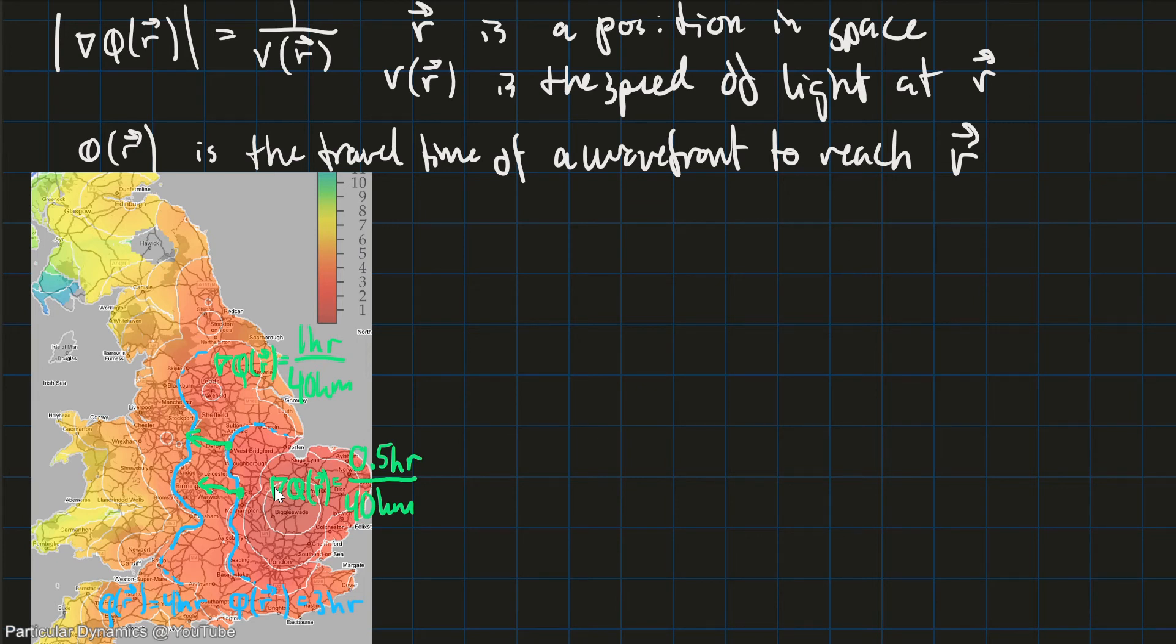And intuitively we see that in the first one where we traveled 40 kilometers in an hour, the speed must of course be slower. It's going to be slow compared to the second case where we travel 40 kilometers in half an hour. That's twice as fast. So this is going to be fast.